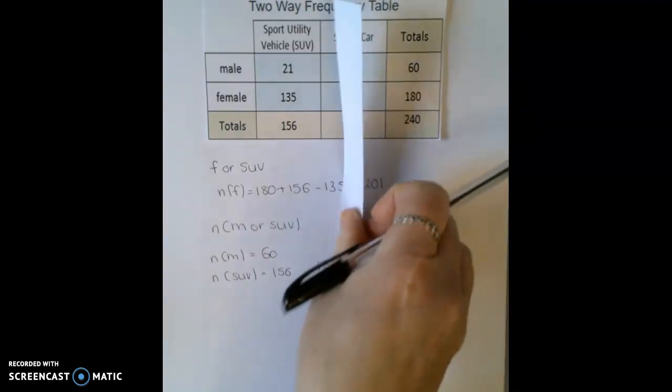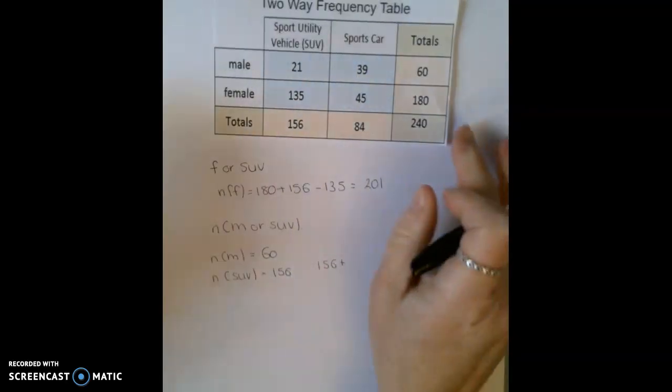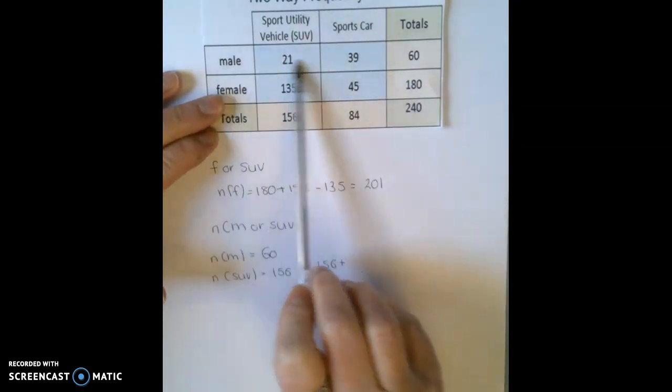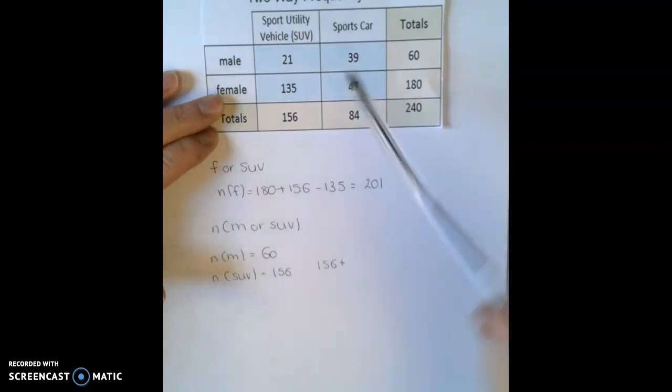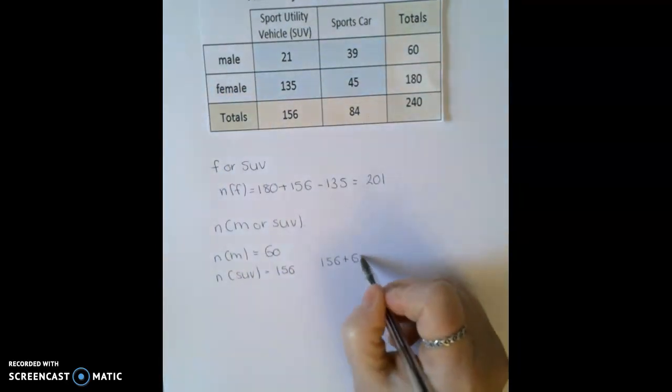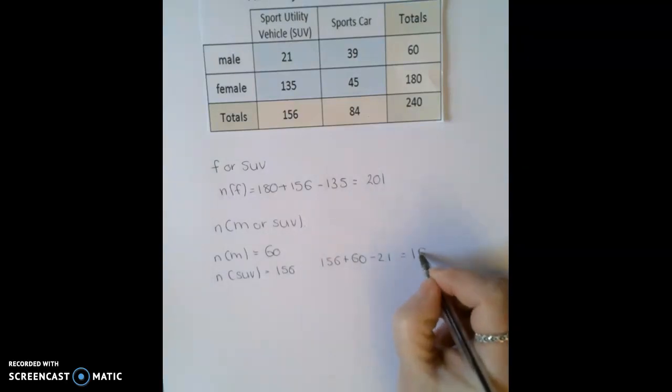But don't forget again, we have counted where they cross, where they intersect, twice. So we've counted this in this row and in this column. So we have to take away the 21. And then that would give us a total of 195.